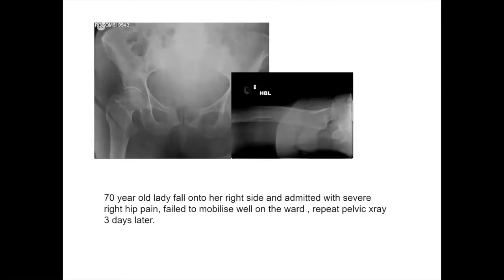Here we have the right hip. A 70-year-old patient who fell on the right side was admitted with severe right hip pain. There's a pelvic x-ray — Shenton's line is preserved, running from the inferior neck of the femur around to the superior obturator foramen, and it's intact. There's no loss of alignment and the trabeculae are intact. The neck is foreshortened due to internal rotation, and a fracture was not diagnosed on either the AP or lateral views.